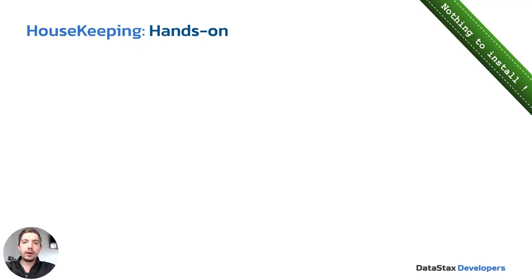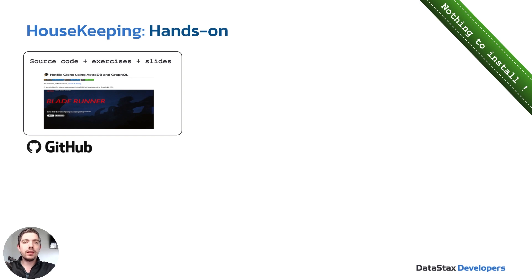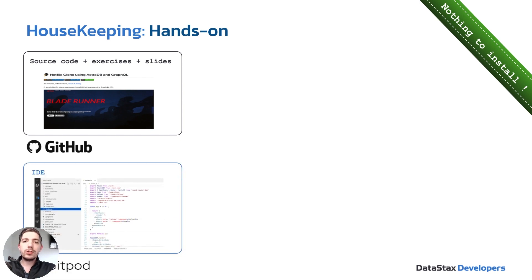Let's start with a few housekeeping things. Today's workshop is going to be very much hands-on and we'll be working out of a GitHub repo — we'll have a link in the description. We'll also be using a tool called Gitpod. Our goal with these workshops is to make sure there's nothing to install on your local machine. If you want to work locally, you absolutely can; there are some dependencies listed in the GitHub repo to make sure things are working fluidly.